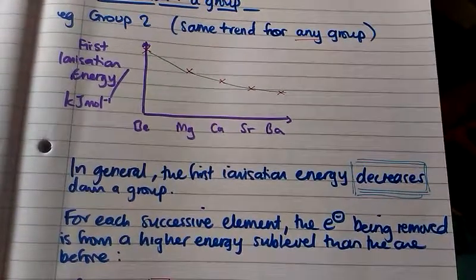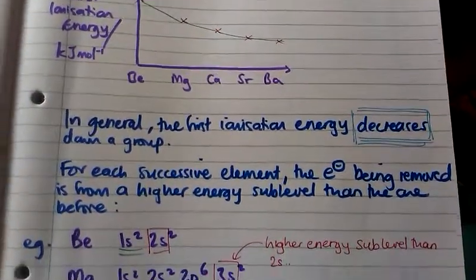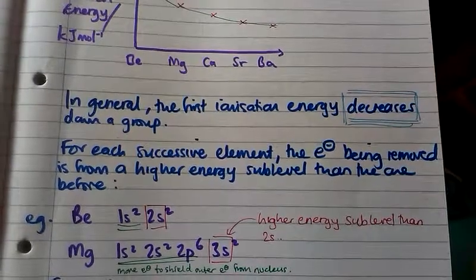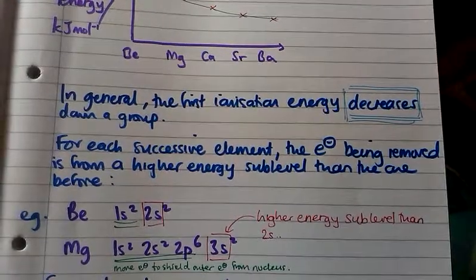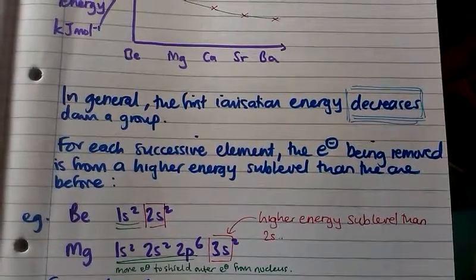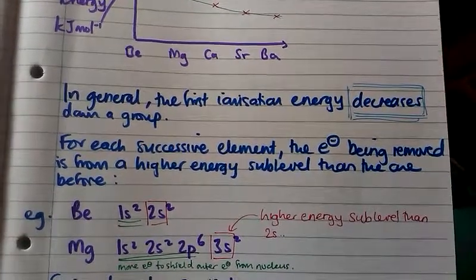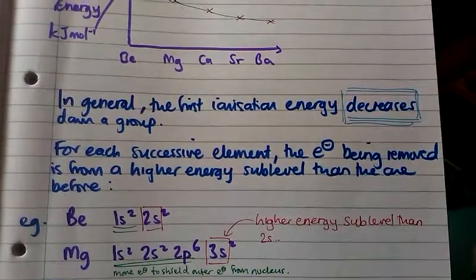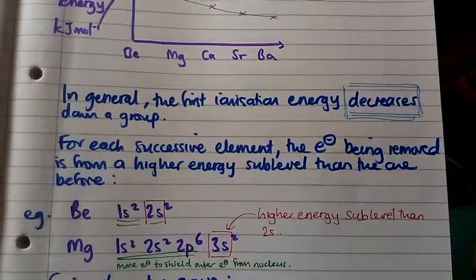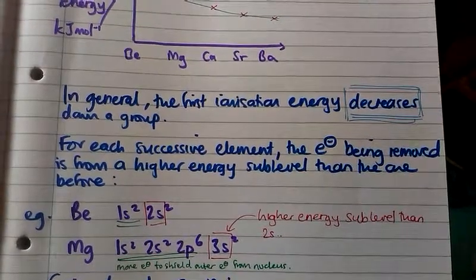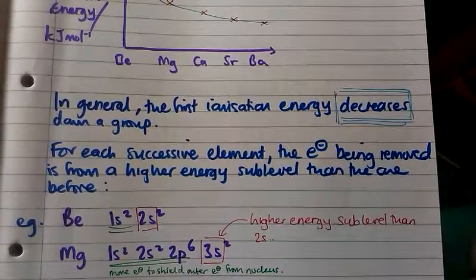That's because for each successive element, the electron being removed is from a higher energy sublevel than the one before. Taking beryllium and magnesium as examples, if we write out the electronic configurations: beryllium has four electrons, so the electronic configuration is 1s², 2s², and magnesium is 1s², 2s², 2p⁶, 3s².